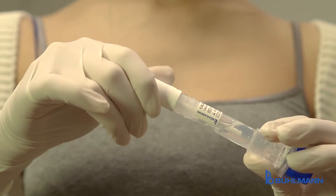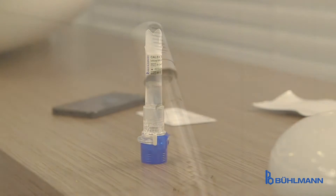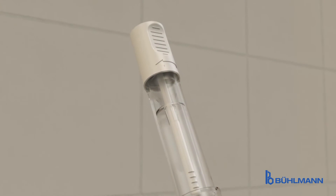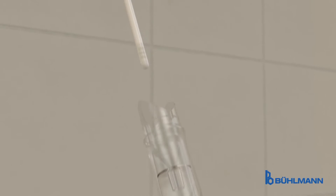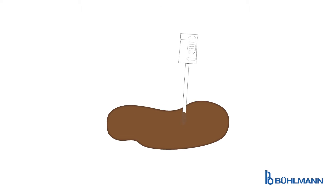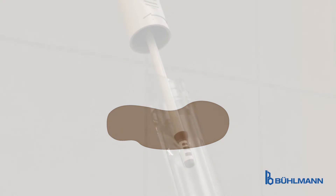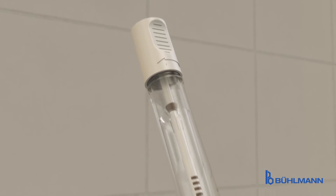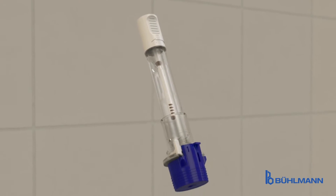When the stool sample is available, the pin of the Kalex extraction device is dipped into the sample a few times with a twisting motion, so that enough stool sticks to the grooves of the Kalex pin tip. Then the pin is placed back into the tube through the upper funnel with a swift motion.